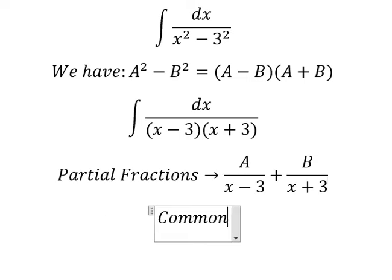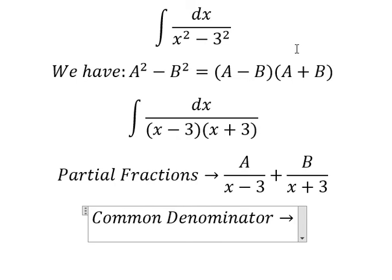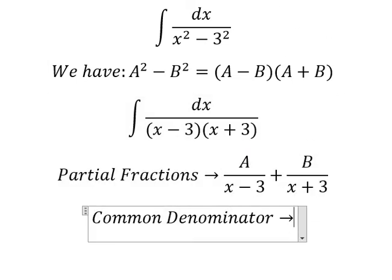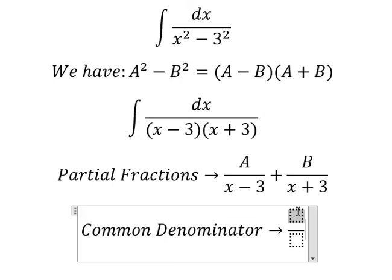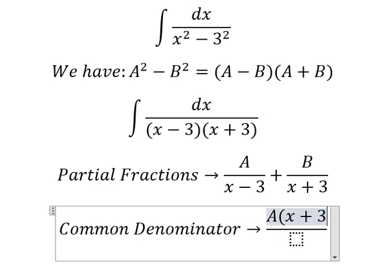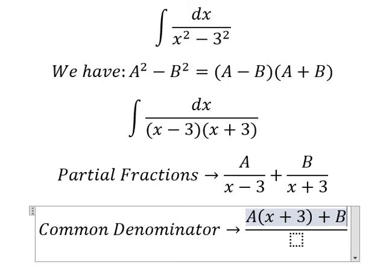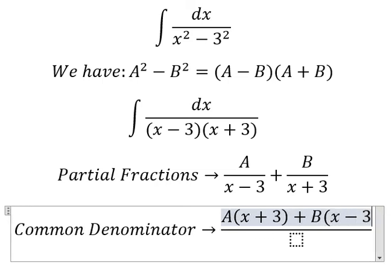So this one is missing about x plus number three, so capital A multiplied by x plus number three. This one is missing about x minus number three, so capital B multiplied by x minus number three.